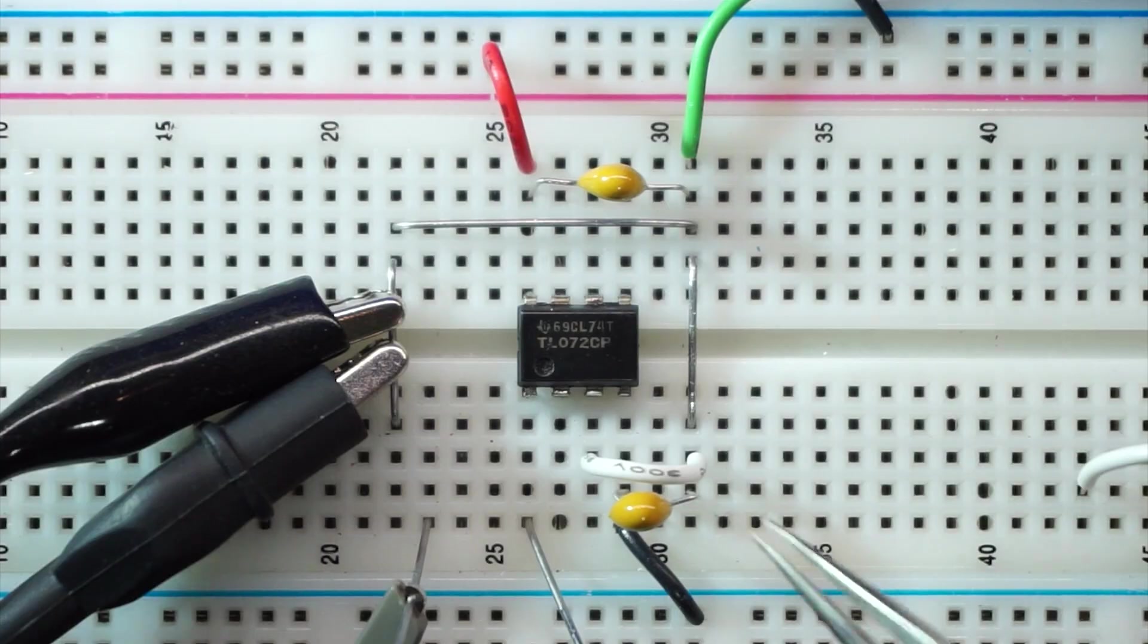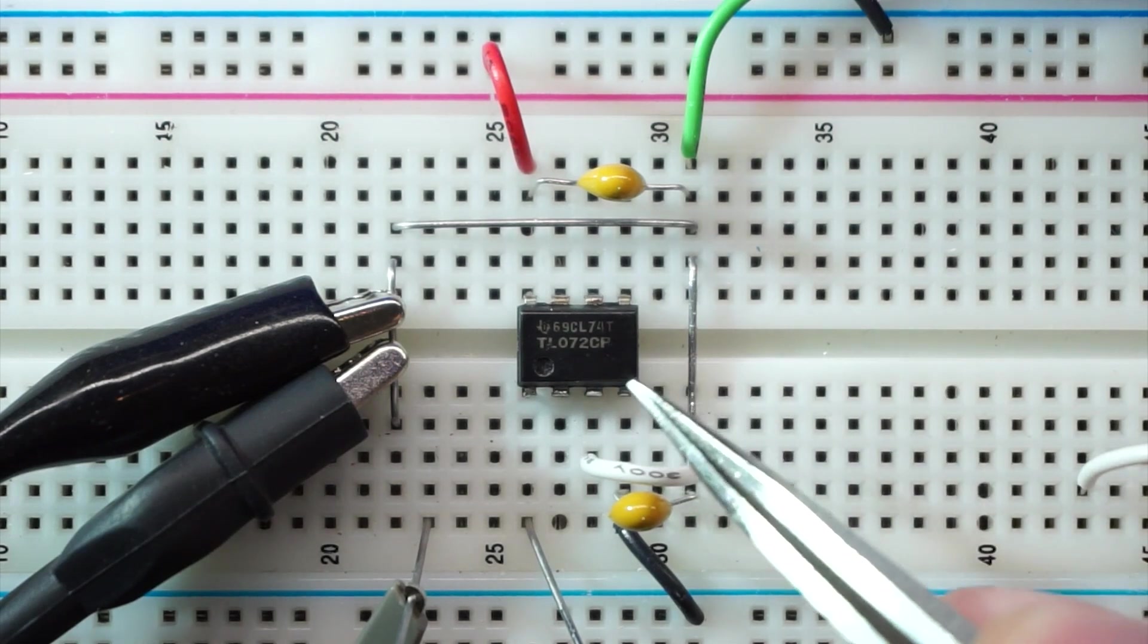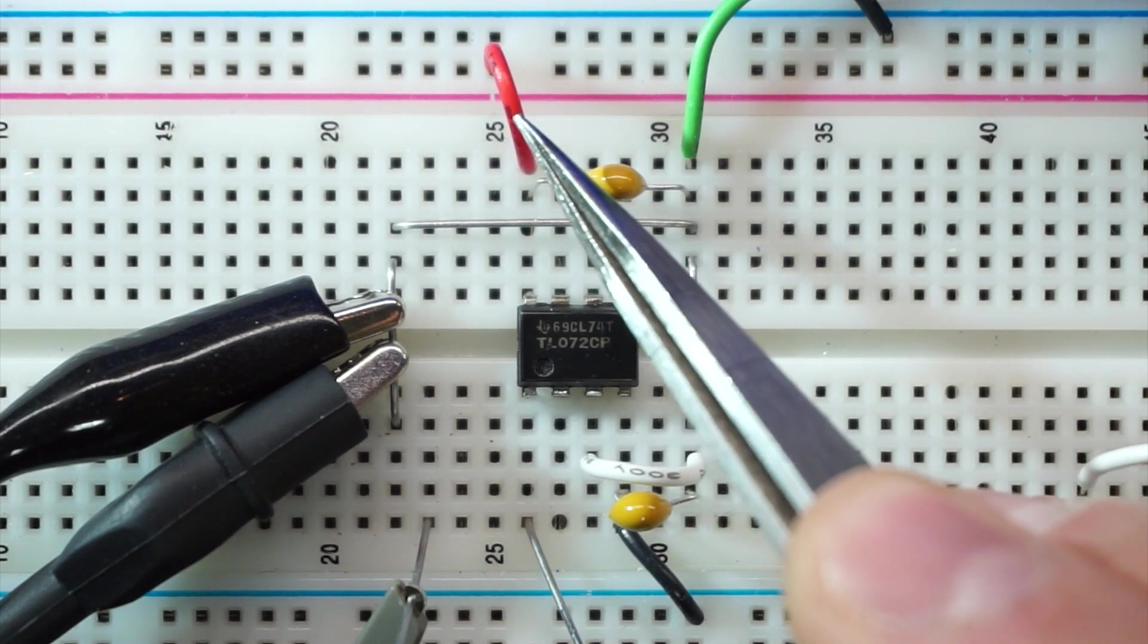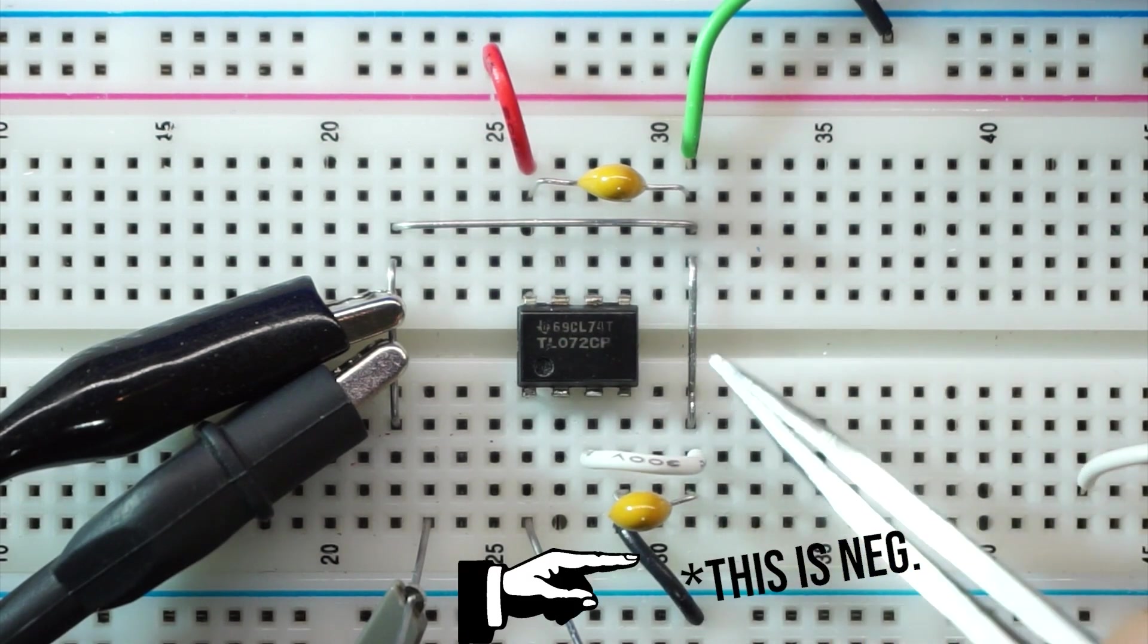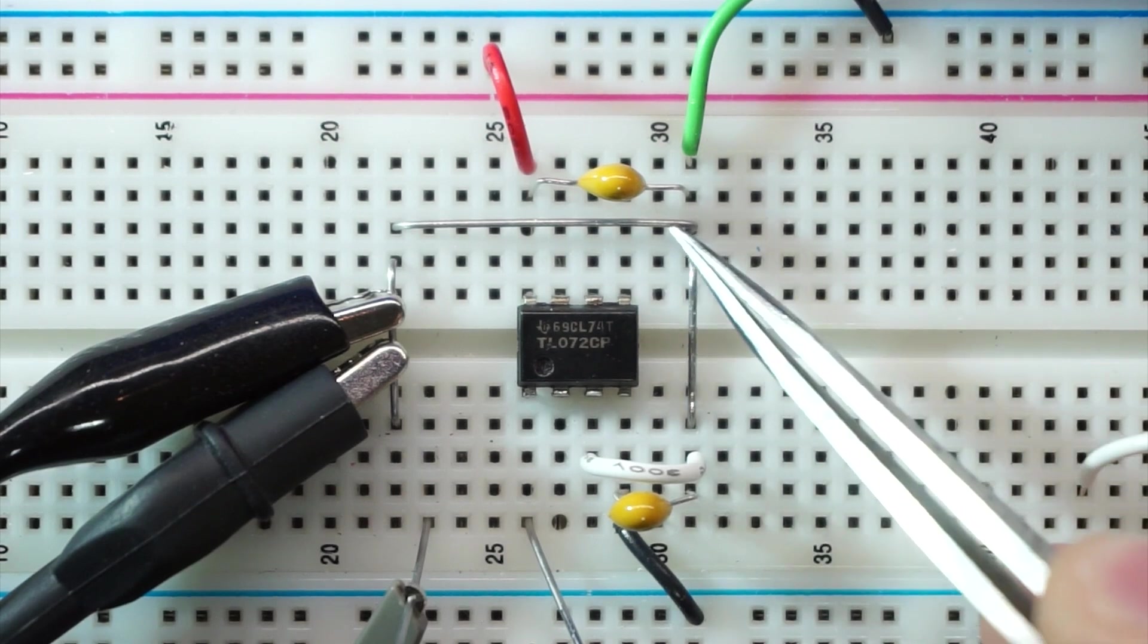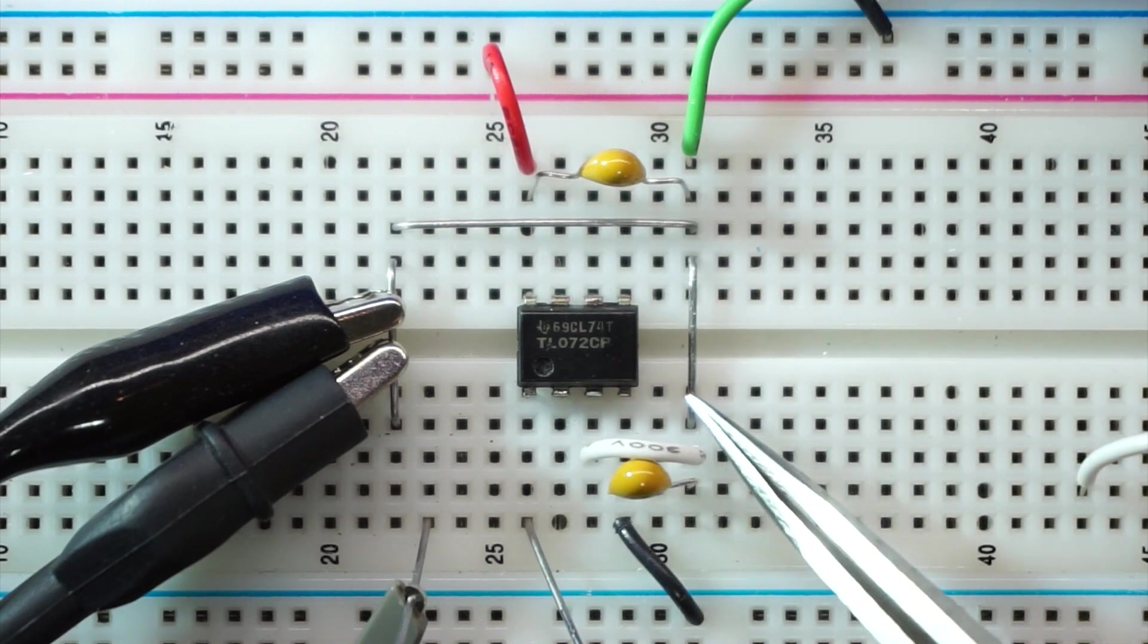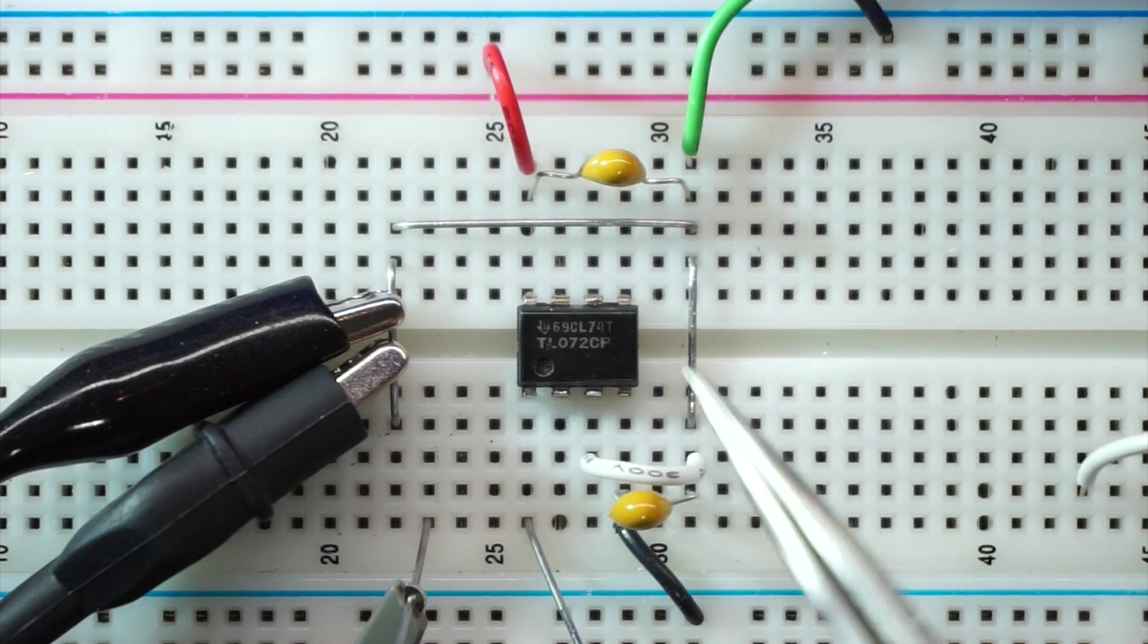For all experiments today, we're using the TL072 from Texas Instruments, which has better performance than the LM741 and a low noise JFET front end. I've set up my power supply with positive 12 volts going to pin 8, negative 12 volts to pin 4, and the bare wires connected to ground. I'm using decoupling capacitors from the positive rail to ground and negative rail to ground.